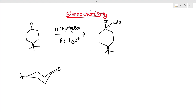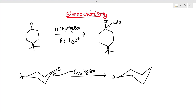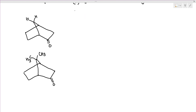For a chair conformation with a bulky group at the equatorial position, CH₃MgBr attacks from the equatorial side. This gives CH₃ at the equatorial position and OH at the axial position in the product.